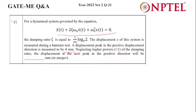So here the equation is given as: ẍ + 2ζωₙ(dx/dt) + ωₙ²x = 0, where ζ is the damping factor.